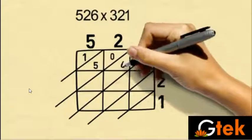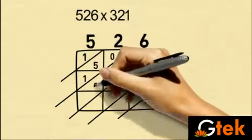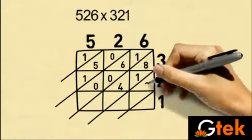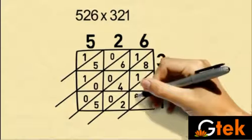5, 3's are 15. 2, 3's are 6. 6, 3's are 18. So 5, 2's are 10. 2, 2's are 4. 6, 2's are 12. 5, 1's are 5. 2, 1's are 2. 6, 1's are 6.